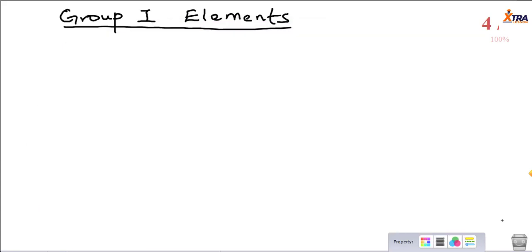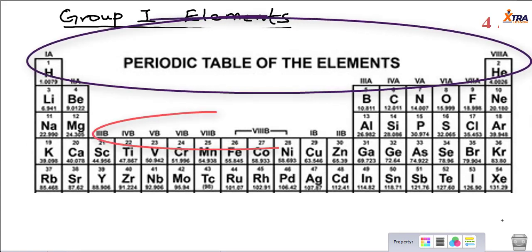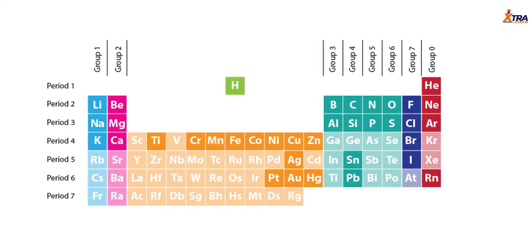The periodic table has group A and group B categories. Group A has 8 groups, and the B category also has 8 groups. For category A, we have 8 groups ranging from group 1 to group 0.